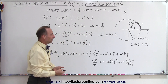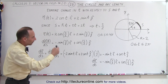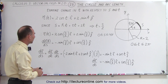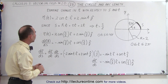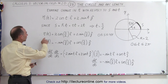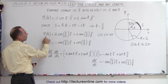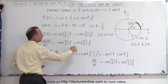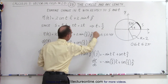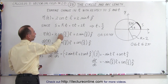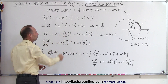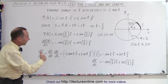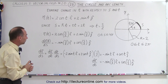It's interesting how the parametric variable — the angle — is simply equal to the arc length divided by 2. So we can represent the position vector in terms of s instead of t. Since t is s over 2, we write 2 times the cosine of s over 2 instead of 2 times the cosine of t, and the same with the sine.